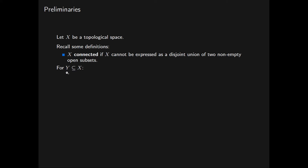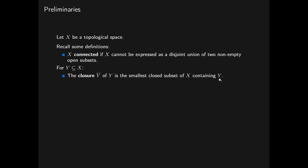For a subset Y of X, the closure of Y, which we denote by Y-bar, is the smallest closed subset of X containing Y. Equivalently, it is the intersection of all closed subsets of X that contain Y. The closure is guaranteed to exist because X is a closed subset of X containing Y.